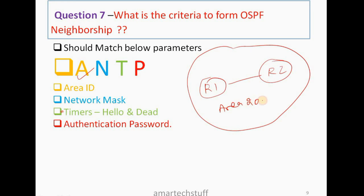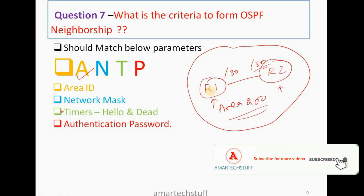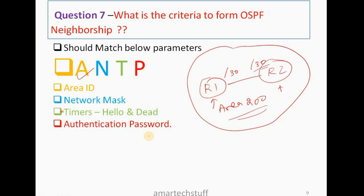'N' stands for network mask — the network mask should match. For example, if the link connecting R1 and R2 has a subnet mask of /30, then for that interface it should be /30 on both sides; only then will neighborship be formed. 'T' stands for timers — the hello timer and dead timer should match. If timers are manipulated on R1, the same changes need to be made on R2 as well.